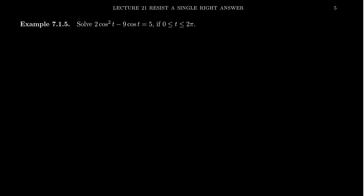In a previous video, we talked about solving linear trigonometric equations. In this video, I want to talk about solving quadratic trigonometric equations. When it comes to solving quadratic equations — something of the form ax² + bx + c = 0 — there are basically three strategies you learn in an algebra class that you can utilize in this situation.